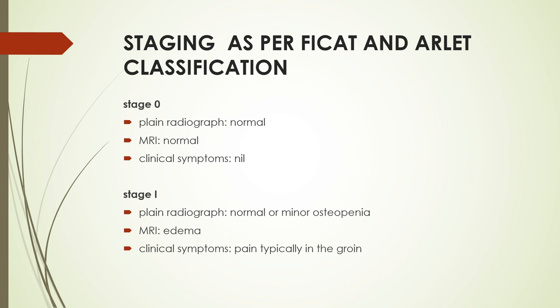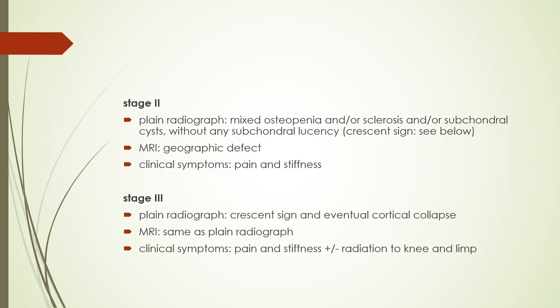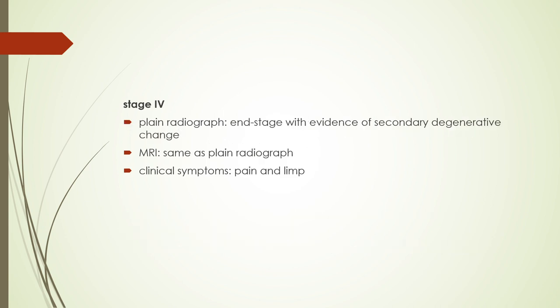Staging as per FICAT and ARLET classification: Stage 0 — plain radiograph and MRI are normal with no significant clinical symptoms. Stage 1 — radiographs may be normal or minor osteopenia may be seen; MRI findings are bone marrow edema; clinically the patient presents with pain typically at the groin. Stage 2 — plain radiographs show mixed osteopenia with or without sclerosis or subchondral cysts without any subchondral lucency; MRI shows geographical defect; clinically patient presents with pain and stiffness. Stage 3 — there is a crescent sign with eventual cortical collapse; MRI findings same as plain radiograph; clinically there is pain and stiffness with or without radiation to the knee and the patient may have limping. Stage 4 — plain radiograph shows end-stage disease with evidence of secondary degenerative changes in surrounding bones; MRI same as radiograph; clinically patient presents with pain and limping.